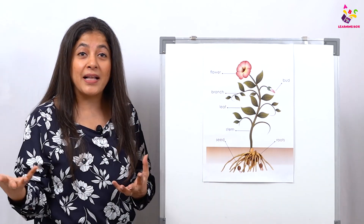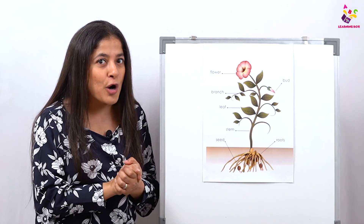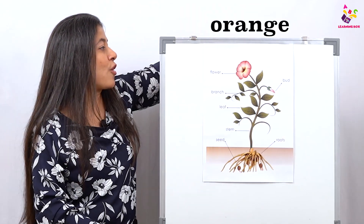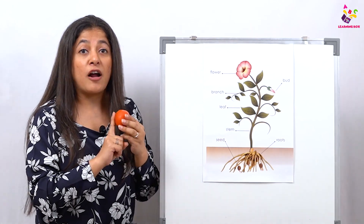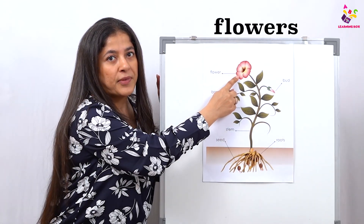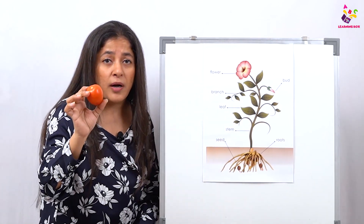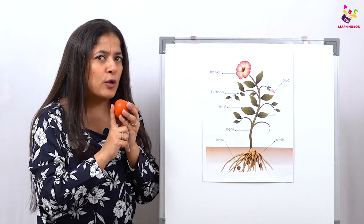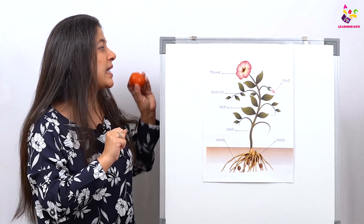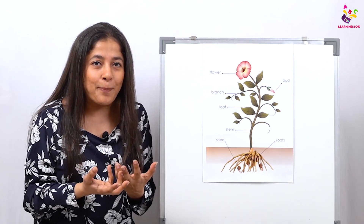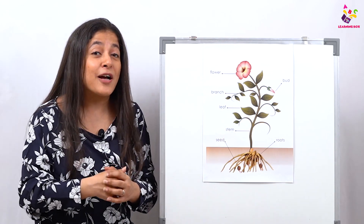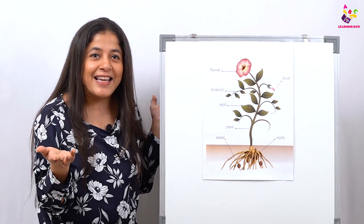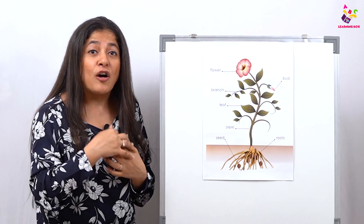Flowers have pollen, and this pollen spreads around with the help of butterflies and birds, and with pollen more plants and trees grow. Also, all the fruits that we eat — like orange or even a tomato — are first flowers! The tomato is first a flower, and after that when the flower ripens it turns into a fruit. A tomato is not a vegetable but a fruit because tomatoes have seeds inside them, and seeds help a new plant to grow — seeds help in reproduction.